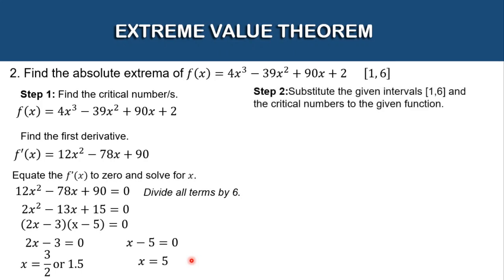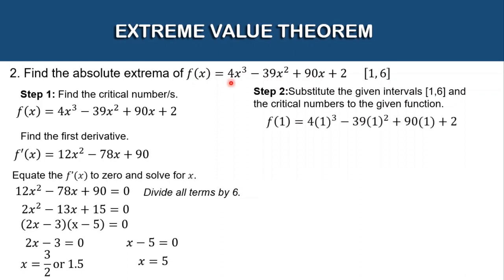For step number 2, substitute the given intervals 1 to 6 and the critical numbers into the given function. We will have four values: x = 1, x = 6, x = 1.5, and x = 5. Starting with x = 1: f(1) = 4(1³) − 39(1²) + 90(1) + 2. Simplifying, the answer is 57.